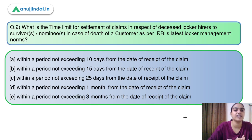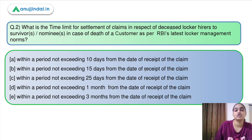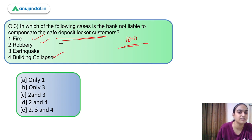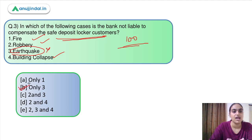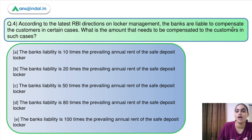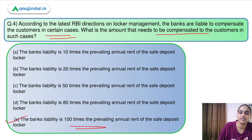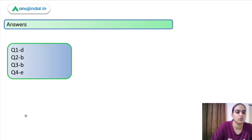To summarize the remaining questions: Question 2 asks the time limit to settle claims for a deceased locker hirer — the answer is 15 days, so option B. Question 3 asks in which case banks are not liable to compensate — natural calamities or acts of God like earthquakes, so option B. Question 4 asks the compensation amount when banks are liable — it is 100 times the annual locker rent, so option E.